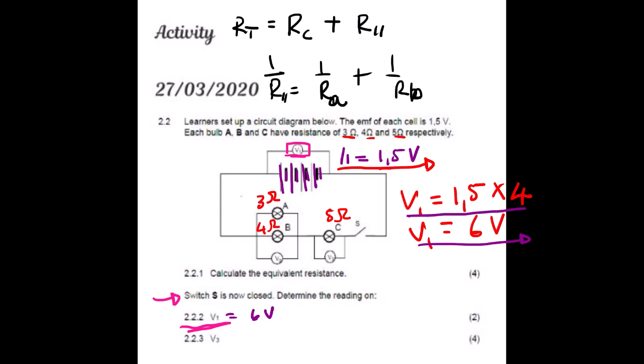Question 2.2.3 asks for the reading on V3. To answer this question you need to review our earlier lessons on electric circuits — lessons 101 and 102. Let us redraw our electric circuit. We can see it has a combination of two connection types: series and parallel.